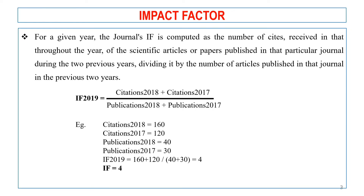Now let's see how to calculate the impact factor. For a given year, the journal impact factor is computed as the number of citations received in that year by scientific articles published in that journal during the two previous years, divided by the number of articles published in that journal in the previous two years.